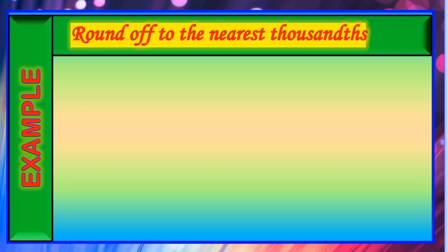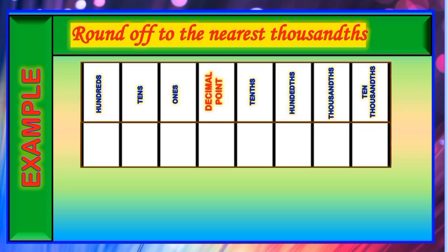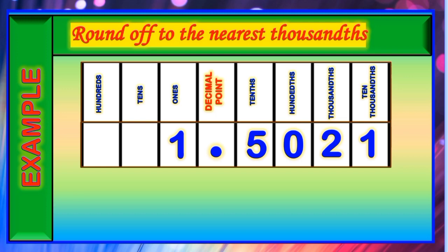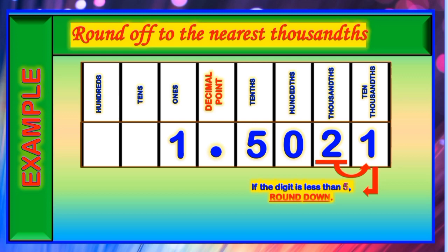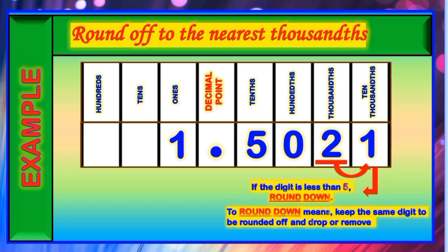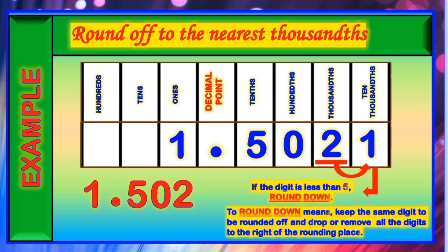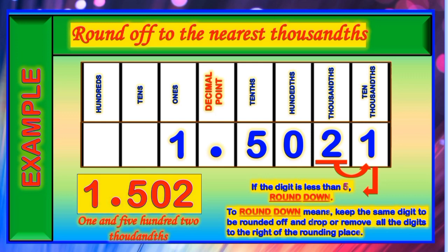Let us have an example of a decimal rounded off to the nearest thousandths. The decimal number is 1 and 5,021 ten-thousandths. The digit in the rounding place is the digit 2, and the digit to its right is the digit 1. Since 1 is less than 5, we are going to round down — we retain the digit 2 and remove the digit 1. The remaining digits are 1, 5, 0, 2. Therefore, the final answer is 1 and 502 thousandths.